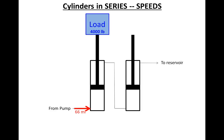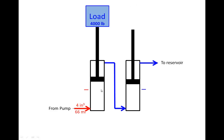As the first cylinder moves, oil is piped out of its top into the bottom of the second cylinder, and as the second moves, oil goes out to the reservoir. With 4 cubic inches going into a 4 square inch area, the piston moves 1 inch. But because the area on top is smaller — only 3 square inches, since the rod takes up space — only 3 cubic inches of fluid come out. So 4 cubic inches went in and only 3 cubic inches came out, meaning 3 cubic inches go into the second cylinder.